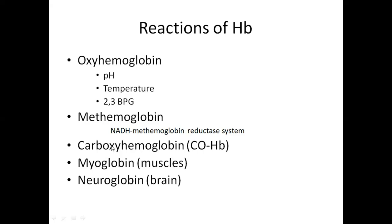Methemoglobin: there is a deficiency of the enzyme methemoglobin reductase. This enzyme is required because iron is present in the oxidized form, and in this oxidized form it is unable to transport oxygen to the tissues. This enzyme causes the reduction of iron. But whenever there is deficiency of this enzyme, no reduction of iron will take place, and more oxidized form of iron — that is, the ferric form — will be present.